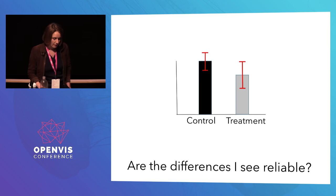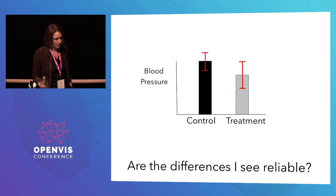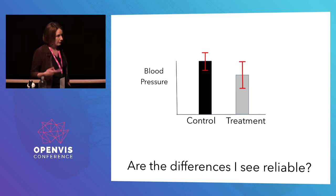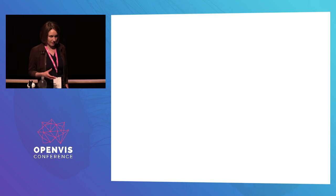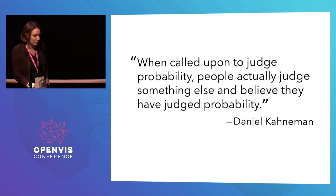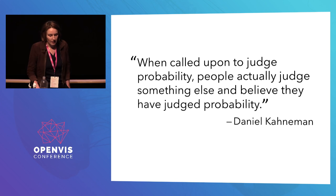For instance, I might have done an experiment looking at blood pressure drugs — a treatment and a control. The treatment group has lower blood pressure, but there's uncertainty because I have a limited number of people. I want my readers to be able to say: what's the probability that this effect would repeat? Nobody can answer that question easily. We might think people are rational — they'll know they can't use the visualization to judge reliability and go look at other statistics. But that's not actually what people do. As Daniel Kahneman has said, when called upon to judge probability, people actually judge something else and believe they've judged probability.